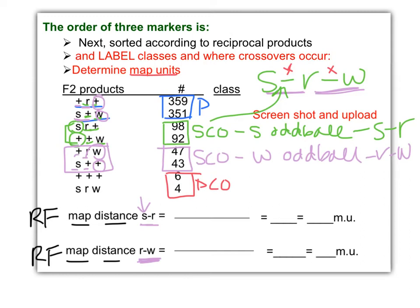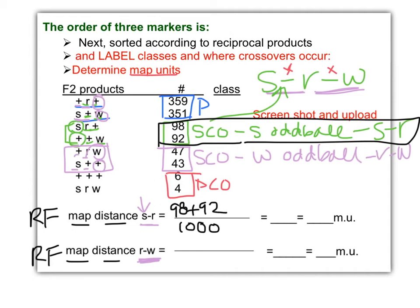So the map distance between S and R has to be the recombination numbers, the numbers of observed offspring over the total for those crossovers. So we said S and R, that these numbers here are for S and R. So we have to go 98 plus 92. And what's our total? 1,000. Is there anything else we're missing? We're looking at crossovers here. What are we missing? What do you think? Inconceivable! Yeah, it is.